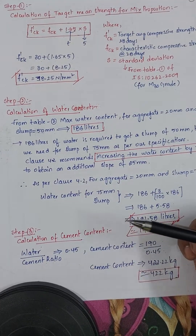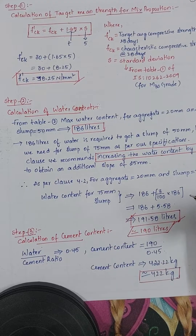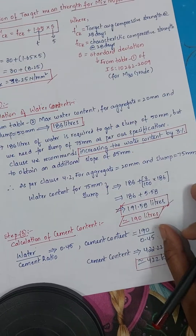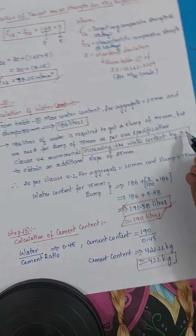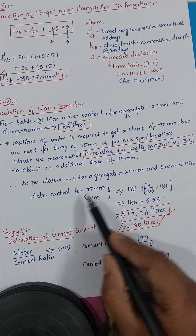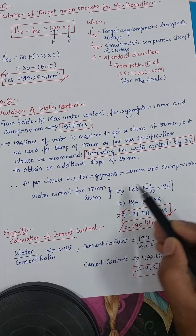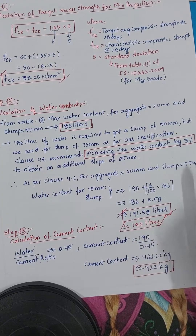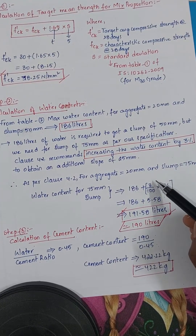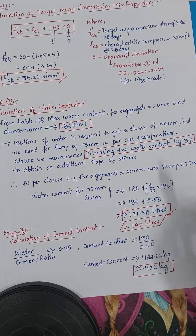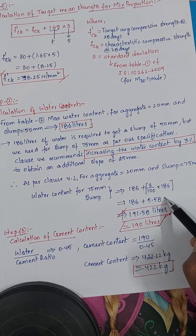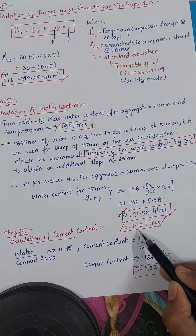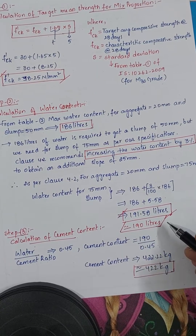Water content for 75 mm slump = 186 + 3% of 186 = 186 + (3/100 × 186) = 186 + 5.58 = 191.58 liters. Approximately, we are taking this as 190 liters.